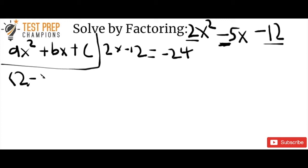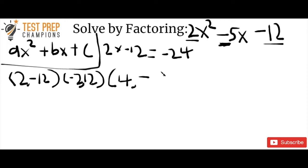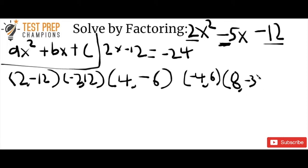So let's think of pairs that multiply to give us negative 24: 2 and negative 12, or negative 2 and 12. What about 4 and negative 6? That works too, and also negative 4 and 6. Then there's 8 and negative 3, and also negative 8 and 3. Hopefully what you see here is that negative 8 and 3 are going to add up to give us negative 5.